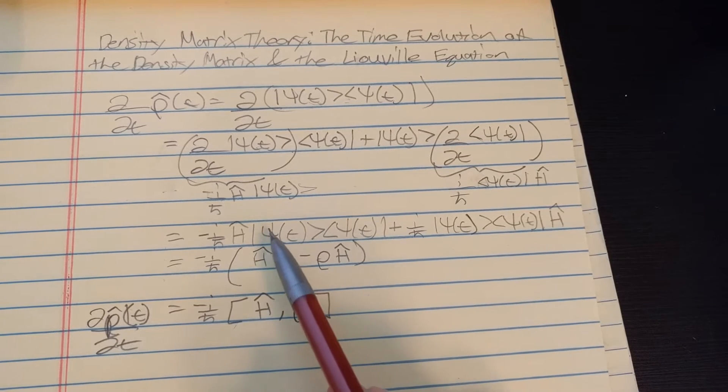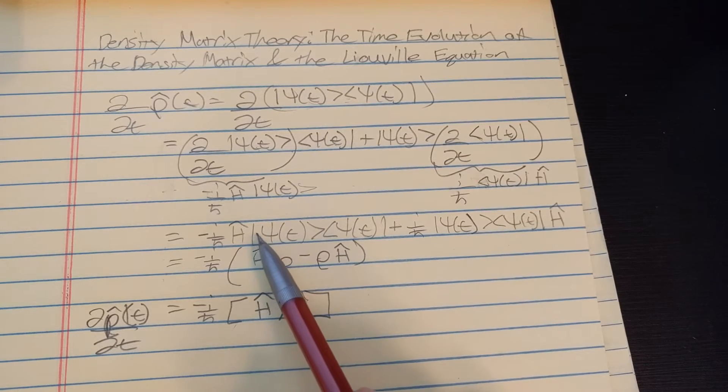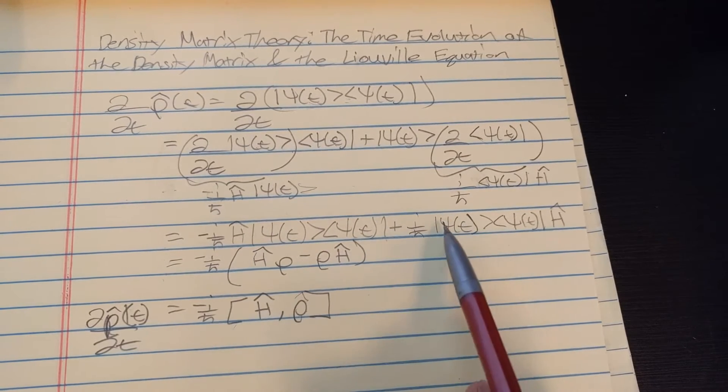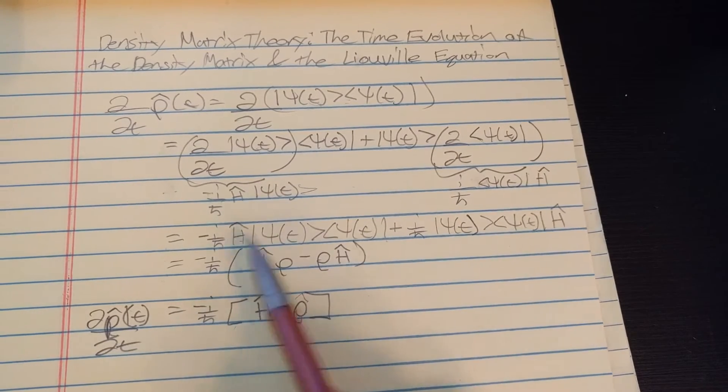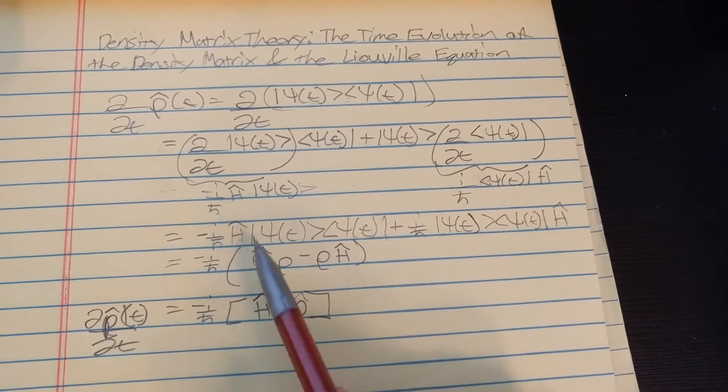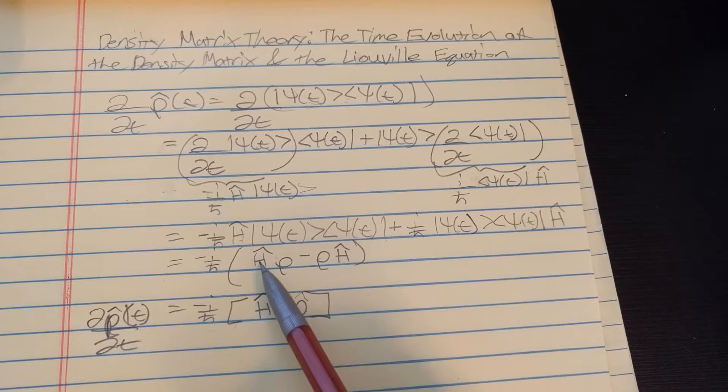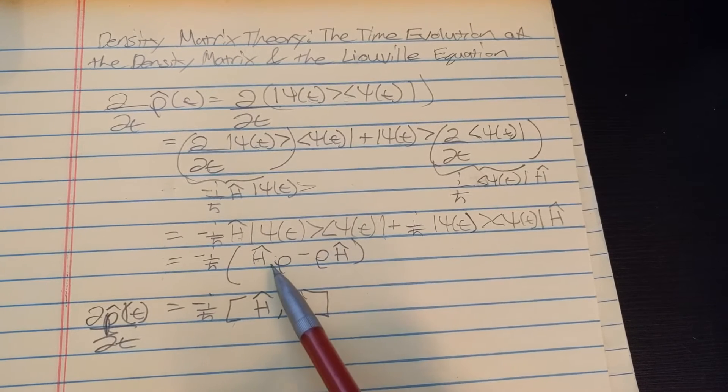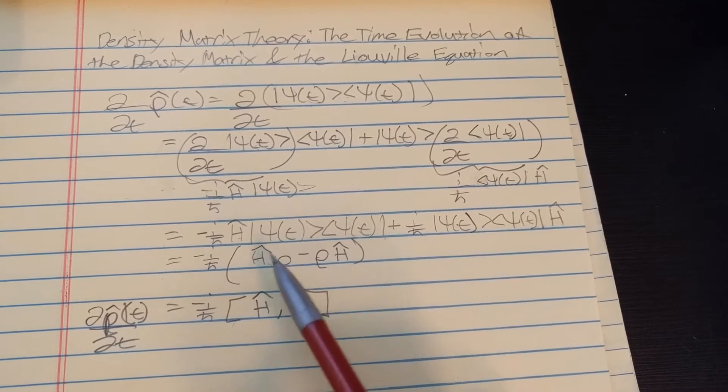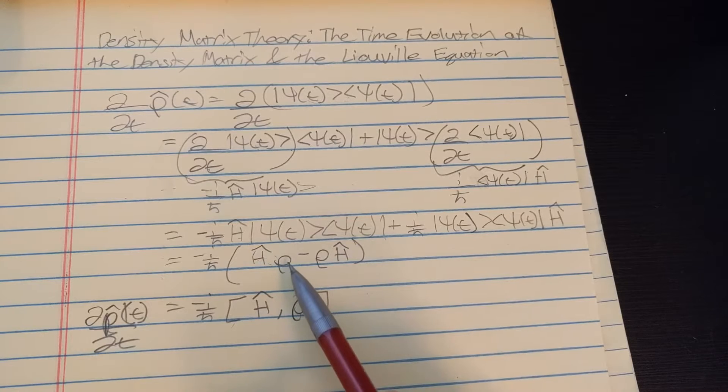And we get back out the density matrix and the Hamiltonian, and we take out i over h-bar to make clear that, yes, this is indeed a commutator between the Hamiltonian and the density matrix.